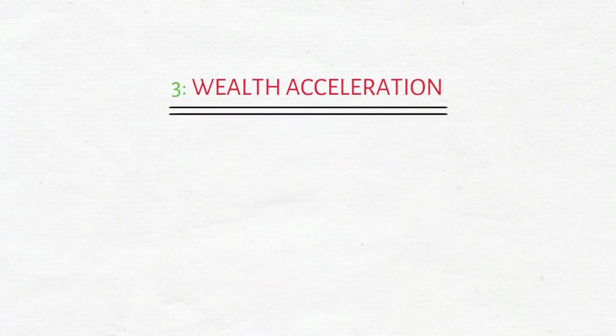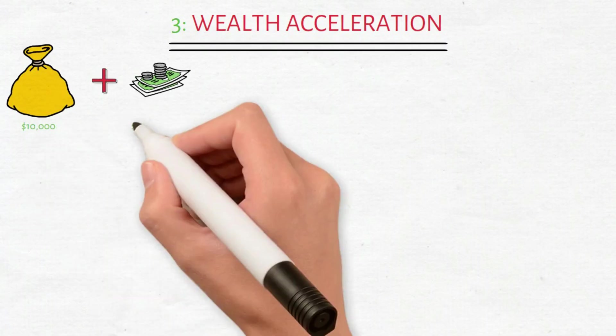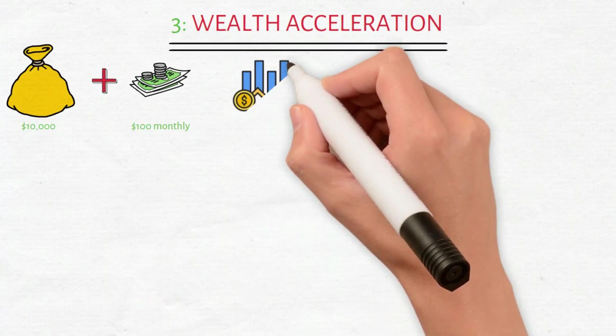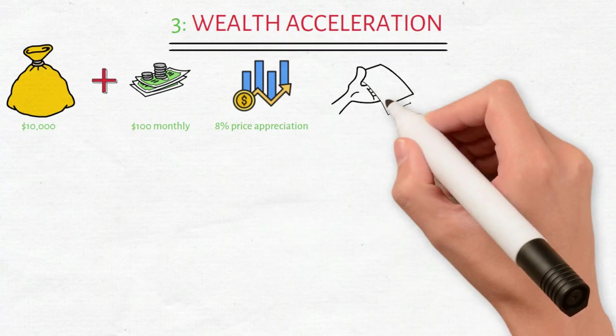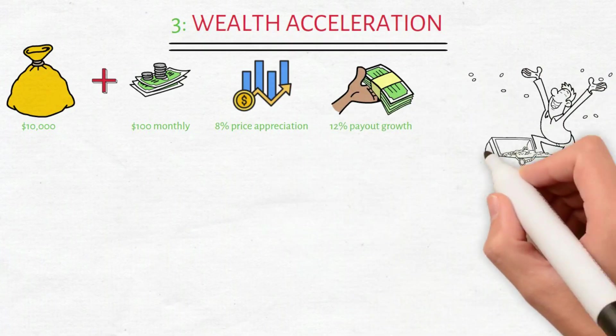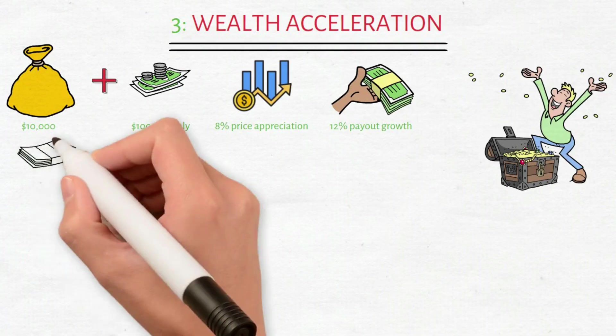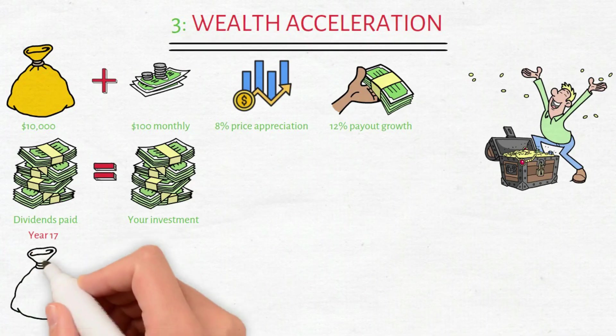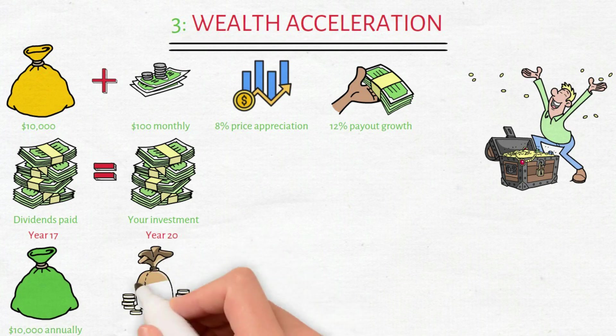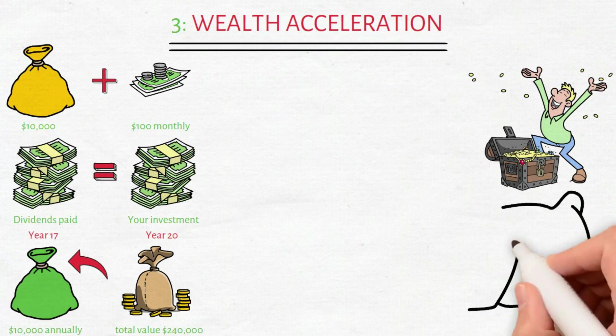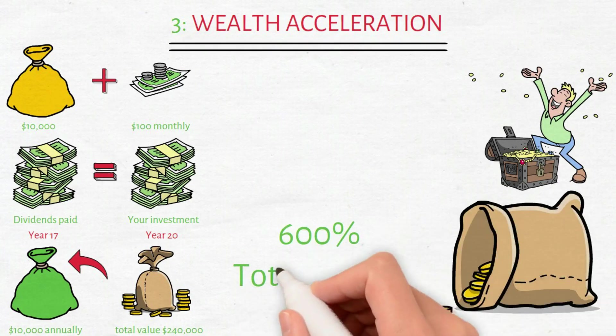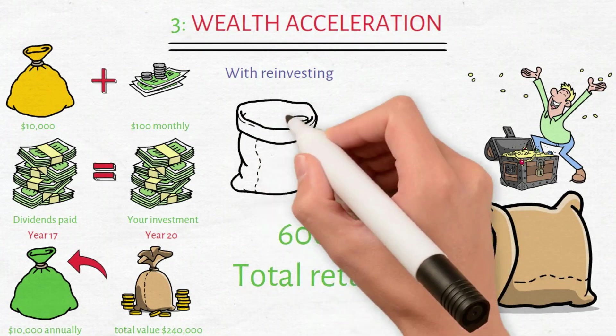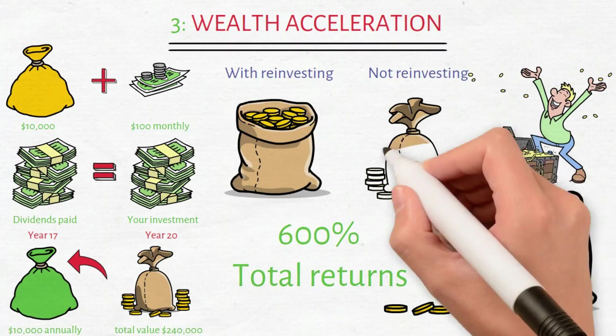Third strategy, wealth acceleration. Begin with $10,000 plus $100 monthly additions. Applying historical metrics of approximately 8% price appreciation and 12% payout growth, extraordinary results emerge by year 13. Total income collected equals your entire investment. By year 17, annual income alone matches your initial $10,000 investment. Year 20 delivers portfolio values approaching $240,000 with nearly $10,000 in annual income. Payout reinvestment produces over 600% total returns. That's 80% superior performance versus not reinvesting.